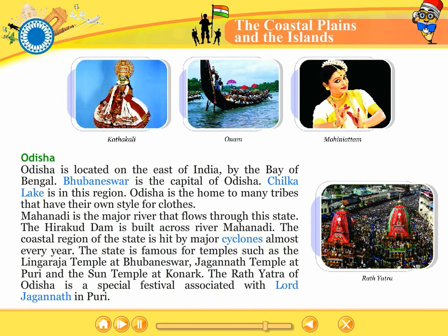Odisha is located on the east of India by the Bay of Bengal. Bhubaneswar is the capital of Odisha. Chilika Lake is in this region. Odisha is home to many tribes that have their own style of clothes. Mahanadi is the major river that flows through this state. The Hirakud Dam is built across the river Mahanadi. The coastal region of the state is hit by major cyclones almost every year. The state is famous for temples such as Lingaraja Temple at Bhubaneswar, Jagannath Temple at Puri and the Sun Temple at Konark. The Rath Yatra of Odisha is a special festival associated with Lord Jagannath in Puri.